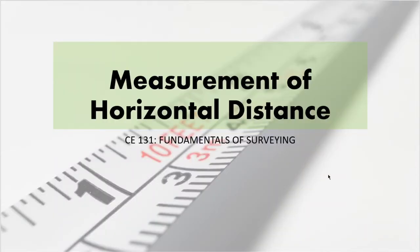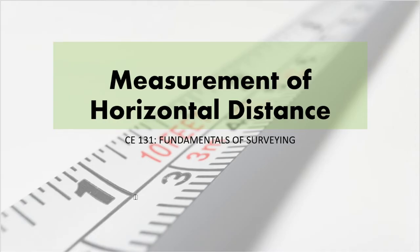Welcome to Chapter 3: Measurement of Horizontal Distance. For this chapter, we are going to talk about distance measurement, which is generally regarded as the most fundamental of all surveying observations. In traditional surveys, even though many angles may be read, the length of at least one line must be measured. In plane surveying, the distance between two points means the horizontal distance. If the points are at different elevations, the distance is the horizontal length between the vertical lines at those points.